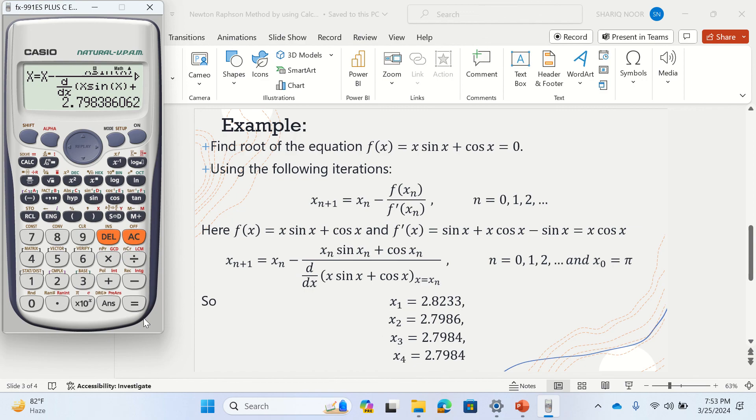So you see that the value is repeating, correct up to 4 decimal places. If you press it again, you see that we are already at 2.7984.